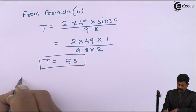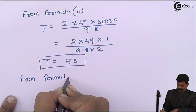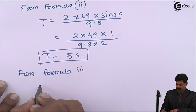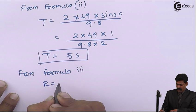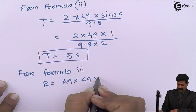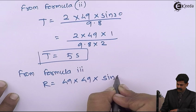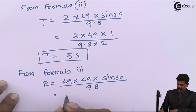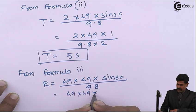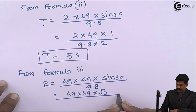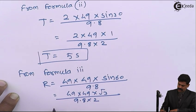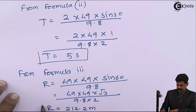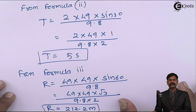From formula 3: R equals 49 into 49 into sine 60 by 9.8. Since sine 60 is root 3 by 2: 49 into 49 multiplied by root 3 by 2, divided by 9.8. So range equals 212.2 meter. Thank you.